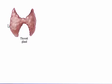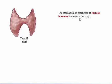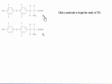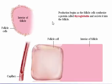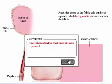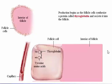Recall that the thyroid gland produces thyroid hormone. The mechanism of production of this amine hormone is unique in the body. Thyroid hormone is really two molecules, T3 and T4, produced by special follicle cells that surround spherical structures called follicles in the thyroid gland. Production begins as follicle cells synthesize a protein called thyroglobulin and secrete it into the follicle. The protein contains multiple copies of the amino acid tyrosine.